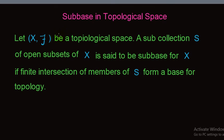Sub-base and topological space is defined as follows: for a topological space X with topology, a sub-collection S of open subsets of X is said to be a sub-base for X if the finite intersection of members of S form a base for the topology. Basically, a sub-base is a sub-collection of open sets whose finite intersections form a base for some topology.